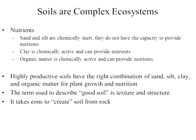When we look at nutrients, we talked about water in soil and air in soil, and how nutrients are dissolved in water to get to plants. Sand and silt are chemically inert, so they don't have the capacity to actually provide nutrients to plants. Clay is chemically active and can provide nutrients, and organic matter is also chemically active and can provide nutrients. So highly productive soils have the right combination of sand, silt, and clay for air, water availability, and drainage, and organic matter for plant growth and nutrition.